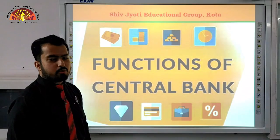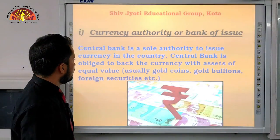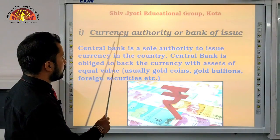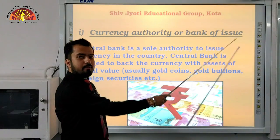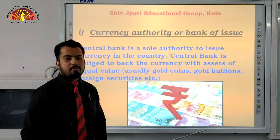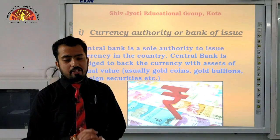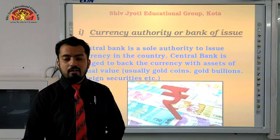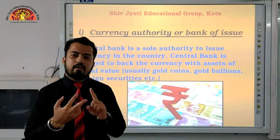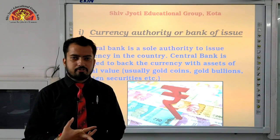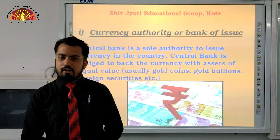Let us see what functions the central bank performs. The first and foremost is Currency Authority, or Bank of Issue. In our country, all currency issued — both currency notes and coins — follows a different process. Currency in India is of two types: paper notes and metallic coins. The method of issuing each is completely different.